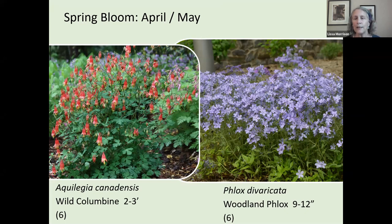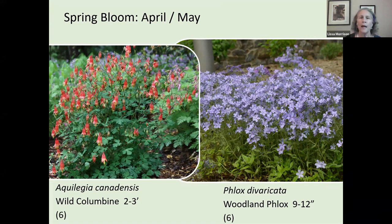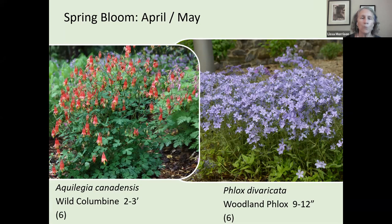Phlox divaricata is the second kind of native phlox I've shown you. It's blooming right now at my house — a very tough, reliable plant that gets a little bigger every year. This one will bloom in a little more shade than sand phlox. Both wild columbine and phlox divaricata can take part sun, meaning they need enough sun to bloom but can handle some shade.